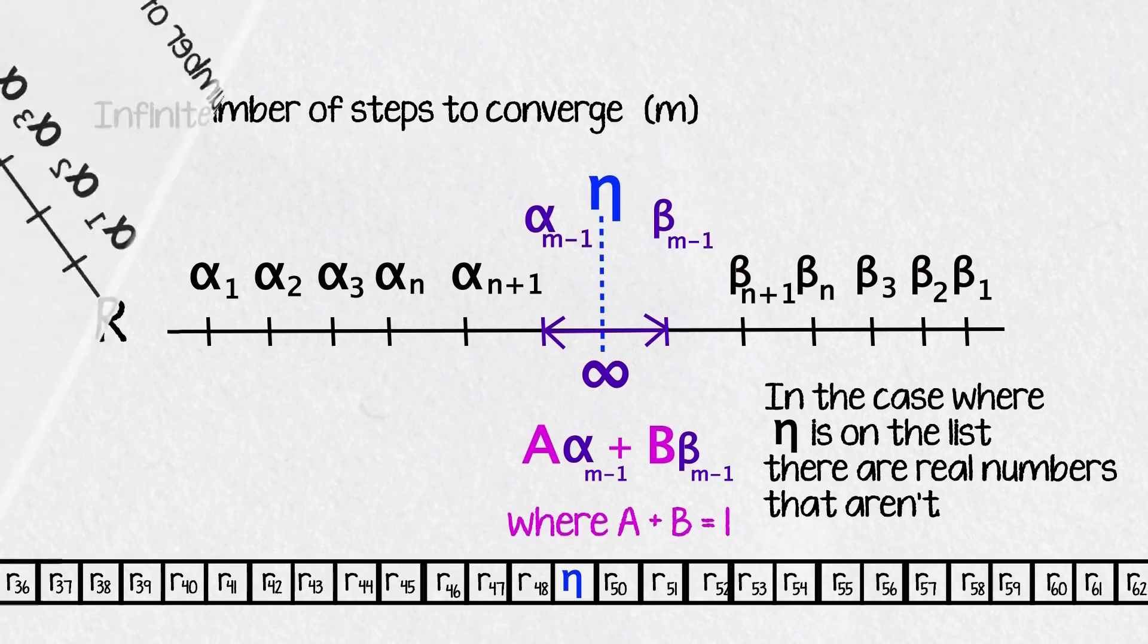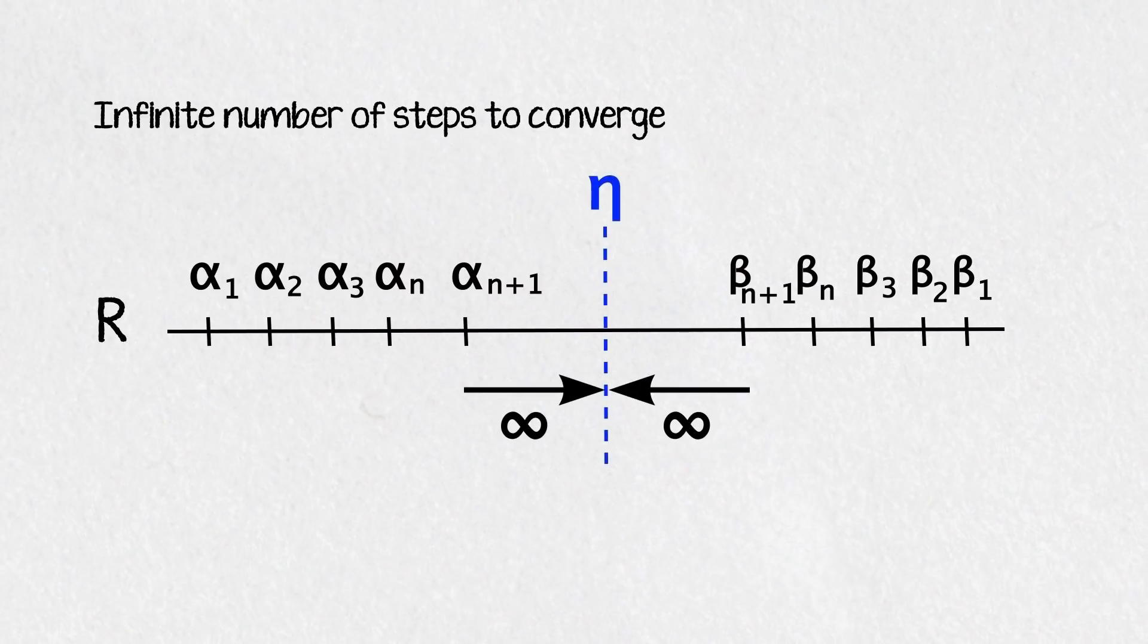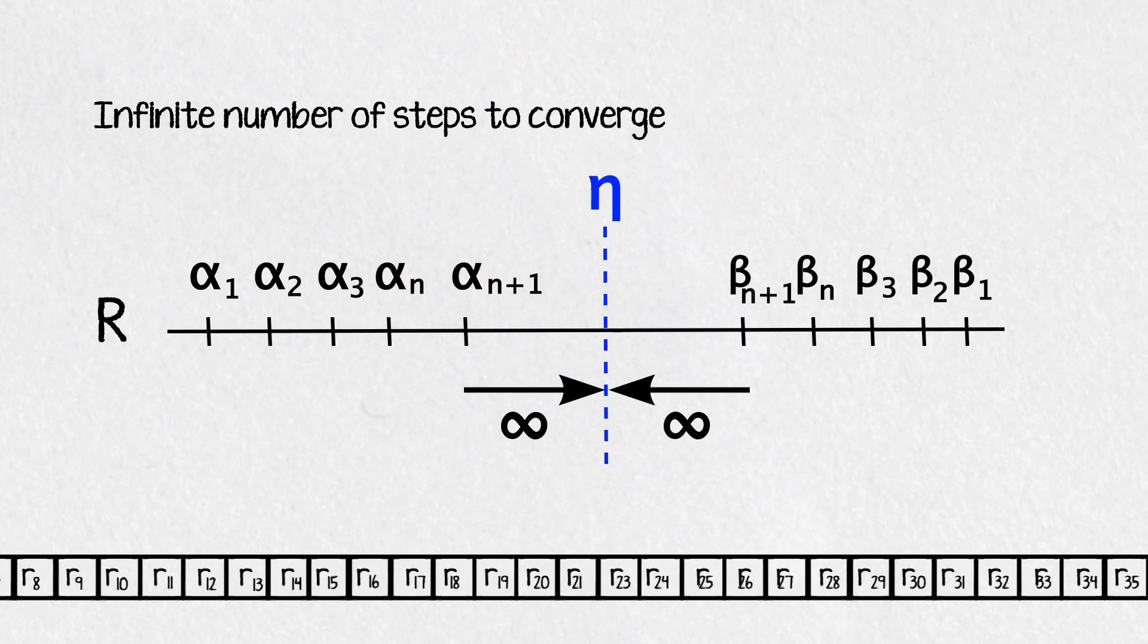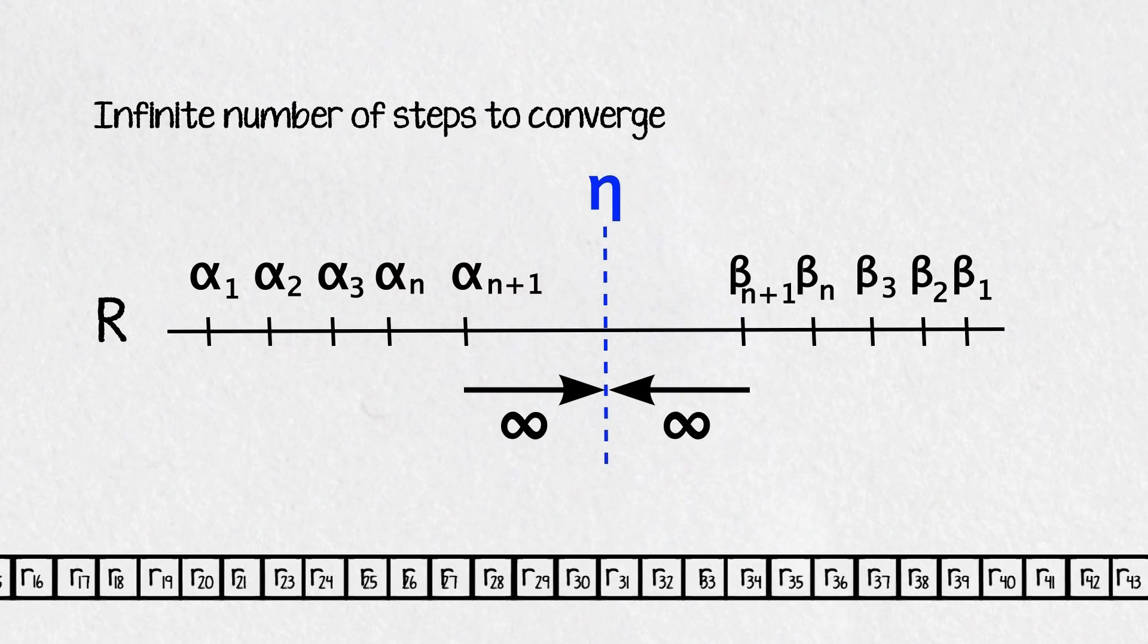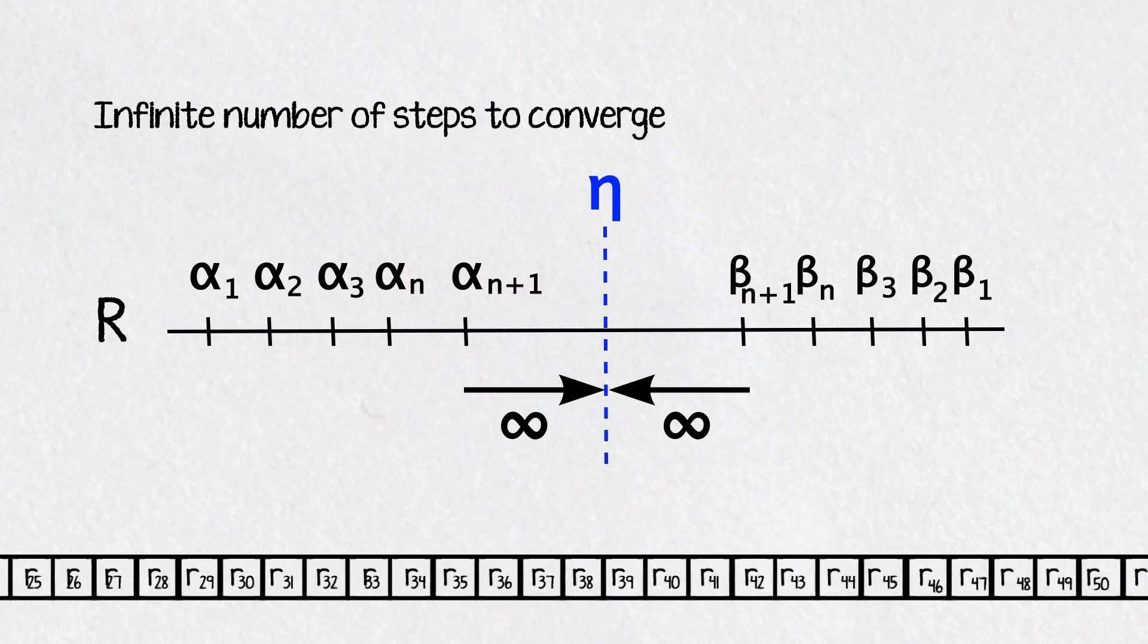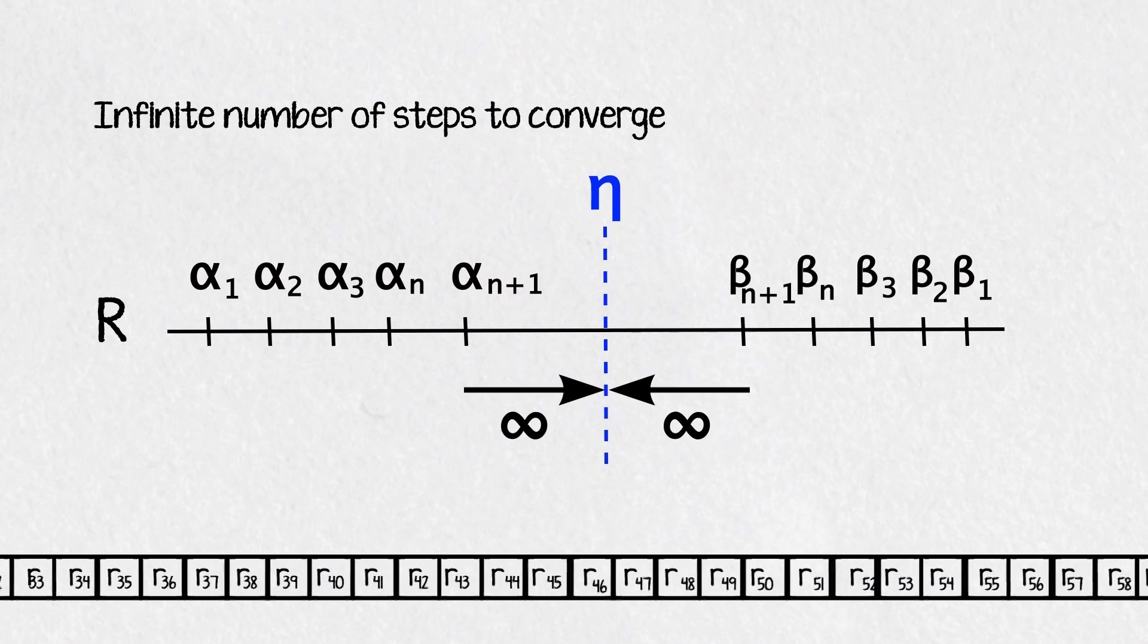So then what if it takes an infinite amount of steps to converge to eta? Well that means there are an infinite amount of alphas and betas that the process picked before it. Because of how we defined our process they must have come before it on the list.